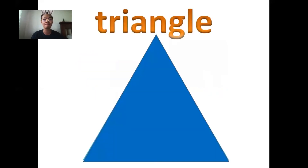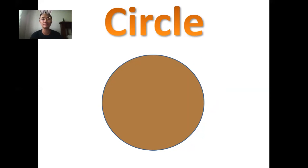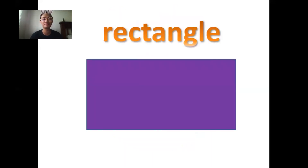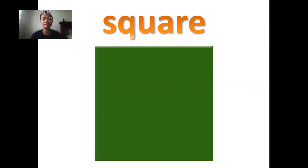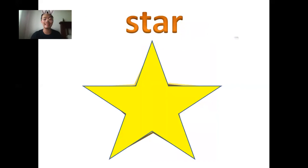Follow after me! It's a blue triangle. It's a blue triangle. It's a brown circle. It's a brown circle. Perfect! It's a purple rectangle. It's a purple rectangle. It's a green square. It's a green square. It's a pink diamond. It's a pink diamond.